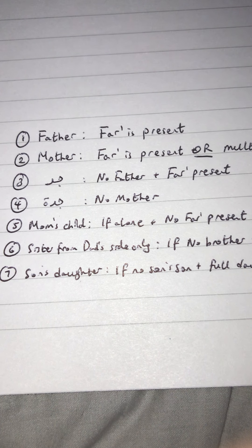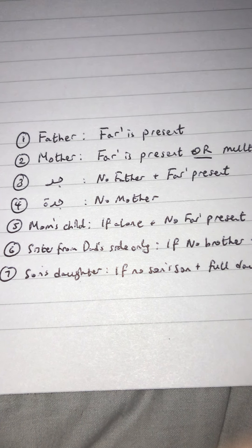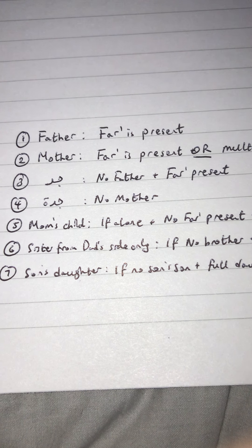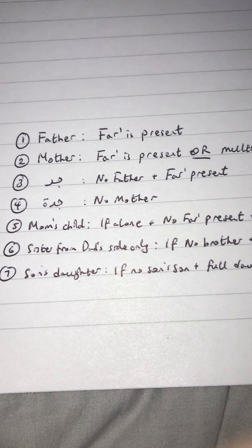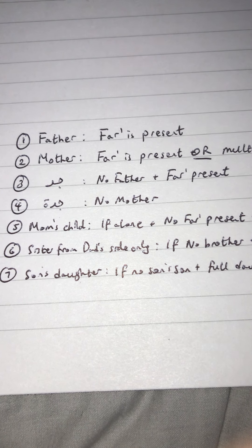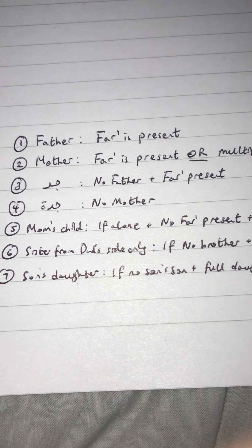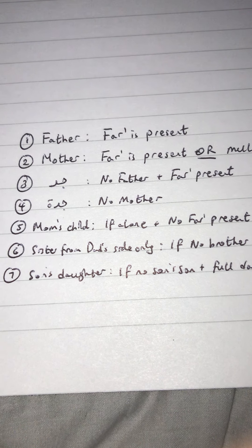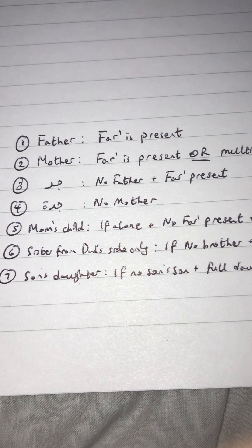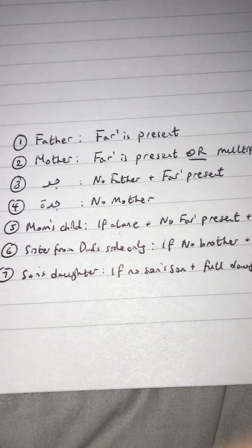The third individual who can inherit a sixth is al-jadd — the paternal grandfather — on the condition that there is no father, and there is a farah warith present. Meaning there is no father blocking him, and there is a farah warith present. If these two conditions are met, then the paternal grandfather will earn a sixth.